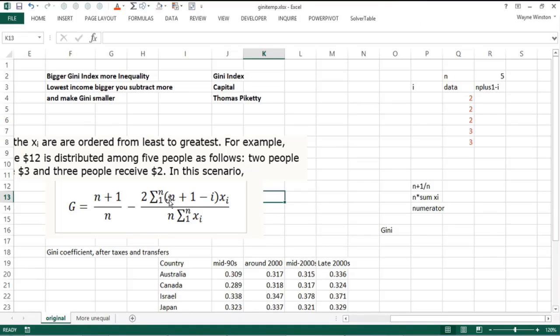If i equals one, you get five plus one minus one—that's five—times the lowest person's income. Then i equals two, you get four times the second lowest person's income, and you get one times the highest income. So you're giving more weight to the people with less income. Basically, if the people with less income have very little money, you're going to be subtracting off a small number here, and that'll make the Gini index bigger. The person who makes the least income gets a weight of five, the second least income a weight of four, etc. If those people don't have much income, you'll be subtracting off a smaller number, which makes the Gini index bigger.